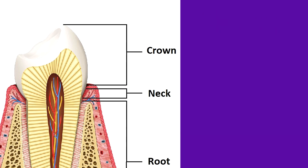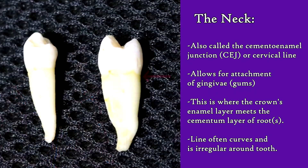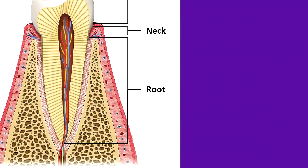The neck of the tooth, also called the cemento-enamel junction or cervical line, allows for the attachment of the gingiva or gums to the teeth. And it represents the area where the crown's enamel layer meets the cementum layer covering the tooth's root. You can usually see the visible line of the neck when you look at an extracted tooth.